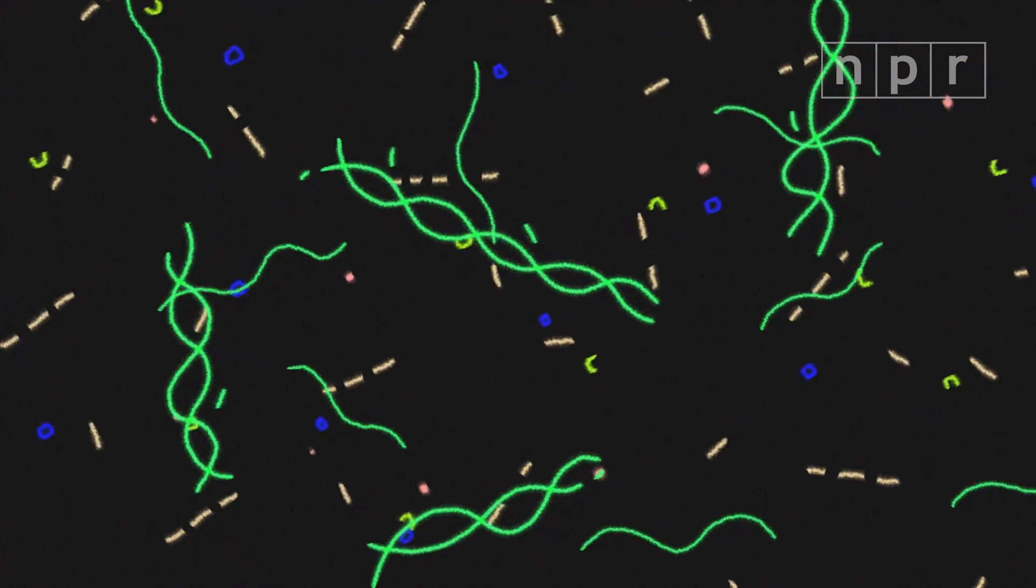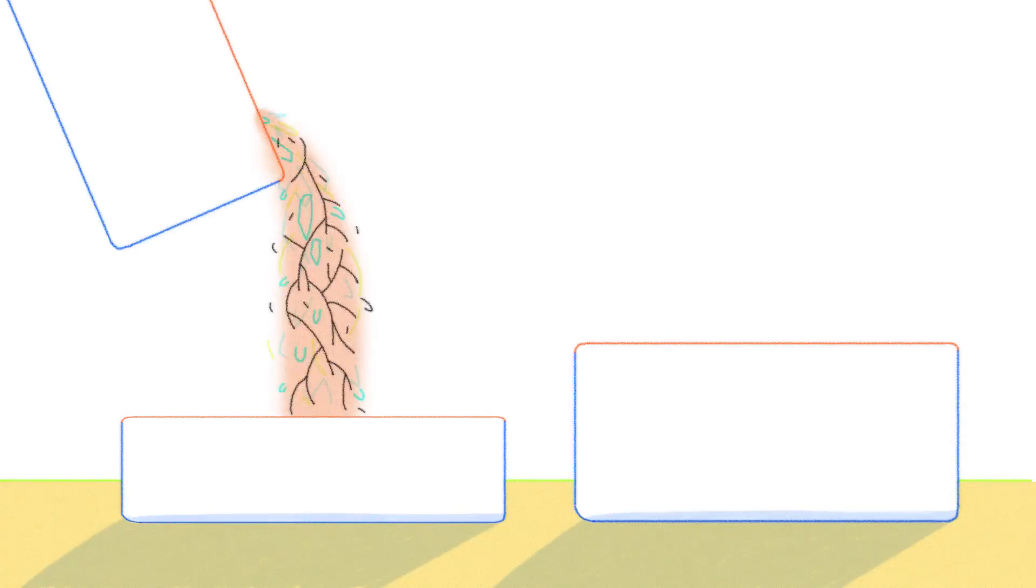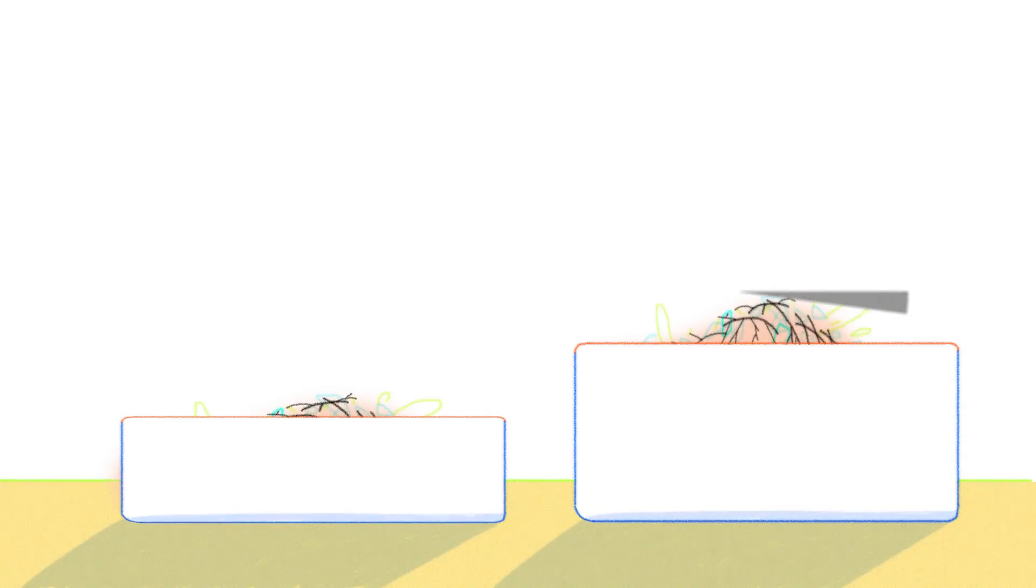We could use this natural glue for the basis of a new packaging material to replace Styrofoam. First, we add mycelium to ground up waste like wood chips or corn husks. Then, we pour the mixture into a mold.